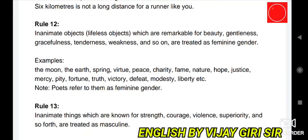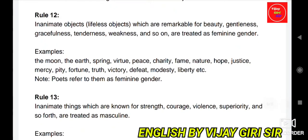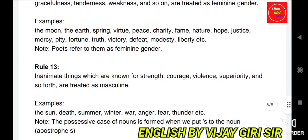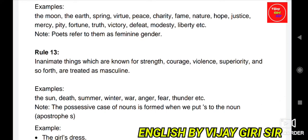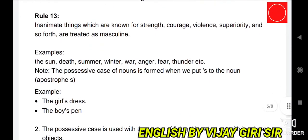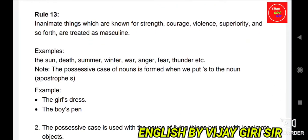These are referred to as feminine gender. And inanimate things known for strength, courage, violence, superiority, and so forth are treated as masculine. For example: the sun, death, summer, winter, war, anger, fear, thunder, etc. are treated as masculine gender.